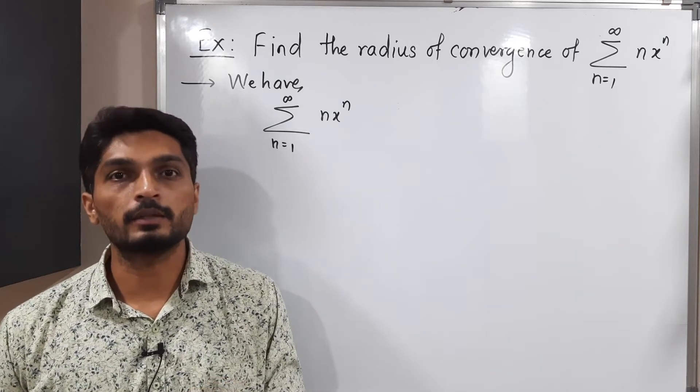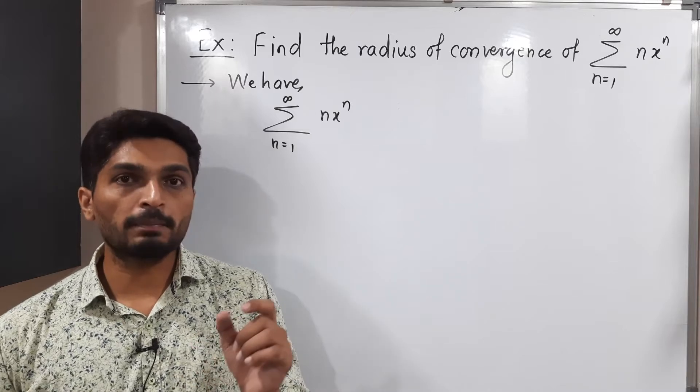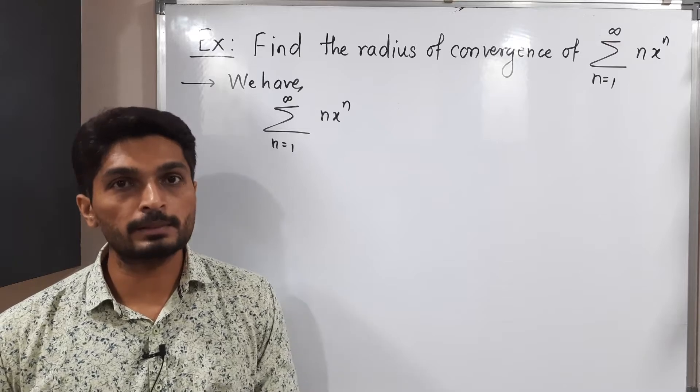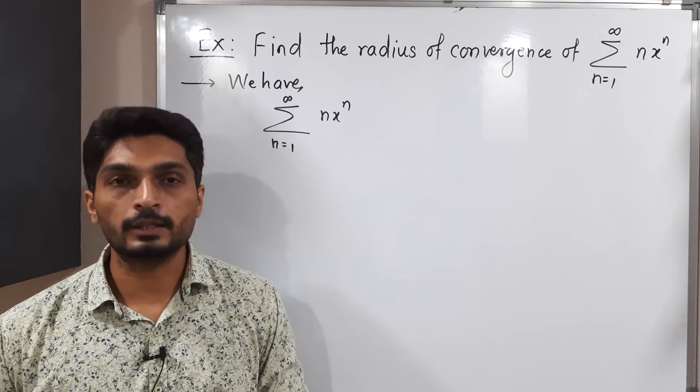So this is a power series around x equals 0. Since normally in a power series we have (x minus p)^n, we have simply x^n. So that's why it is a power series around x equals 0.